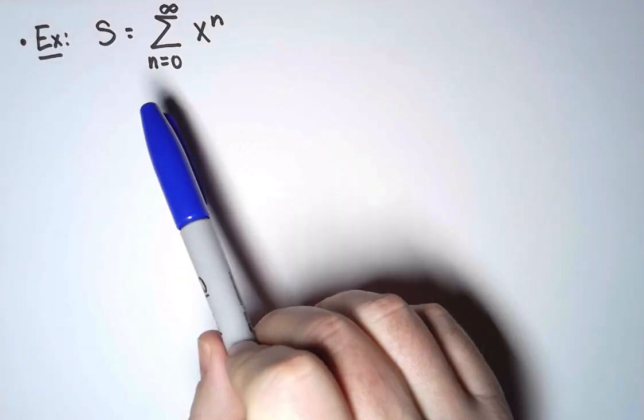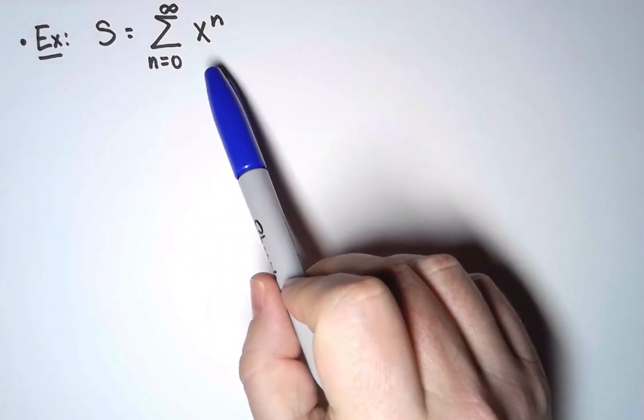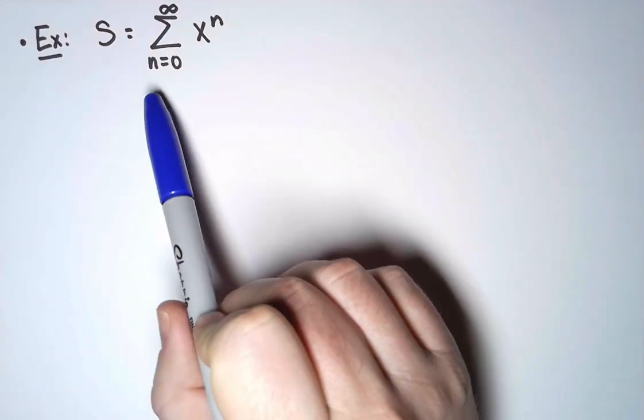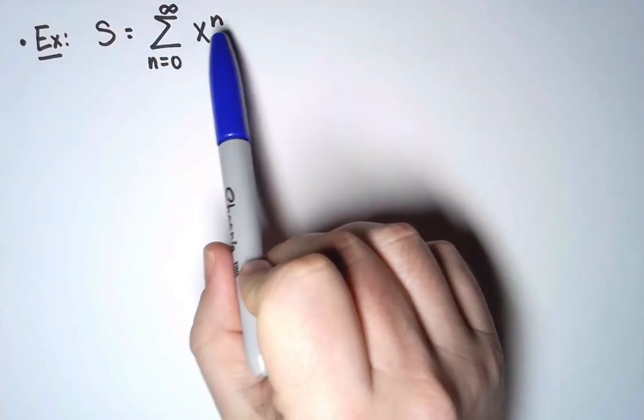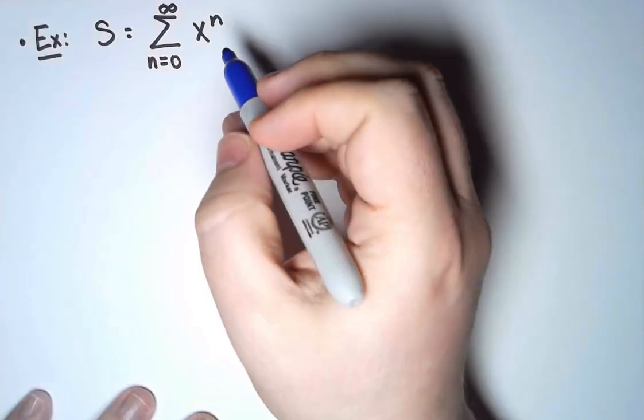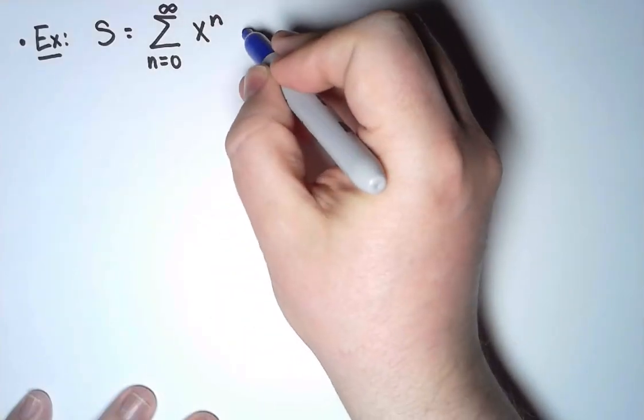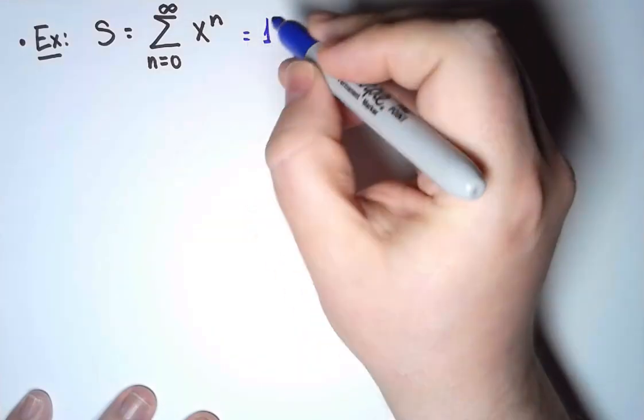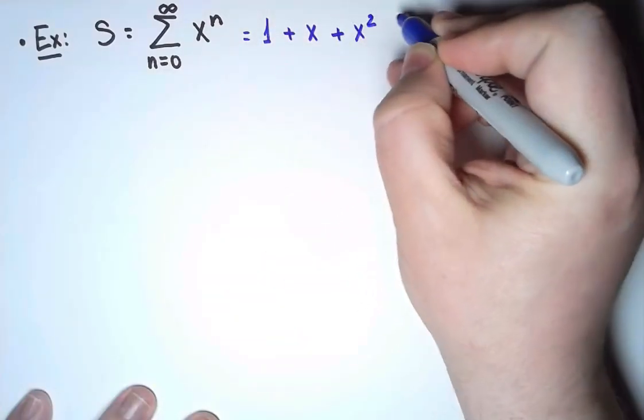For my first example, I'm going to look at this sum. x is a fixed real number, and I have the sum from n equals 0 to infinity of x to the n, and I'm going to call the value of this sum s. So what does this sum mean? First, when n equals 0, I get 1. When n equals 1, I get x, and I add it. When n equals 2, I get x squared, and so on.